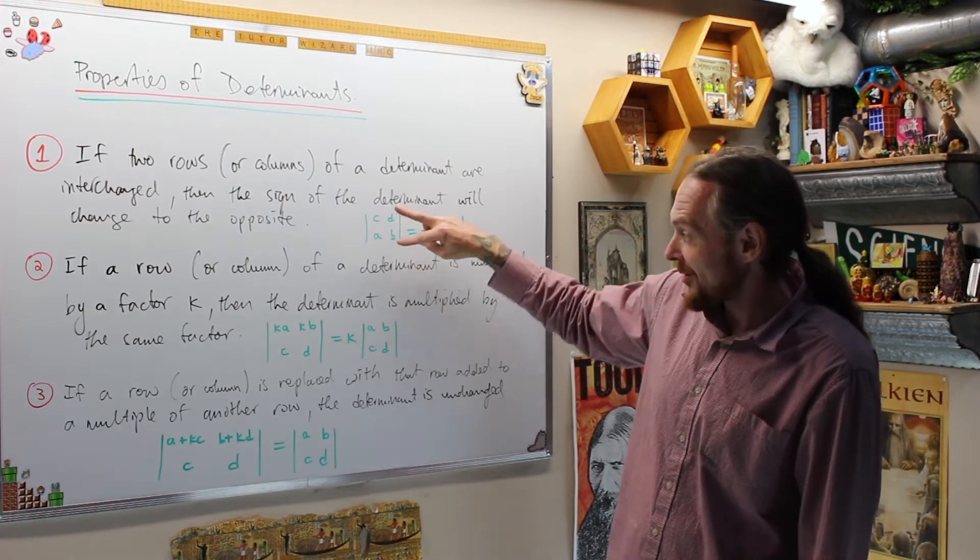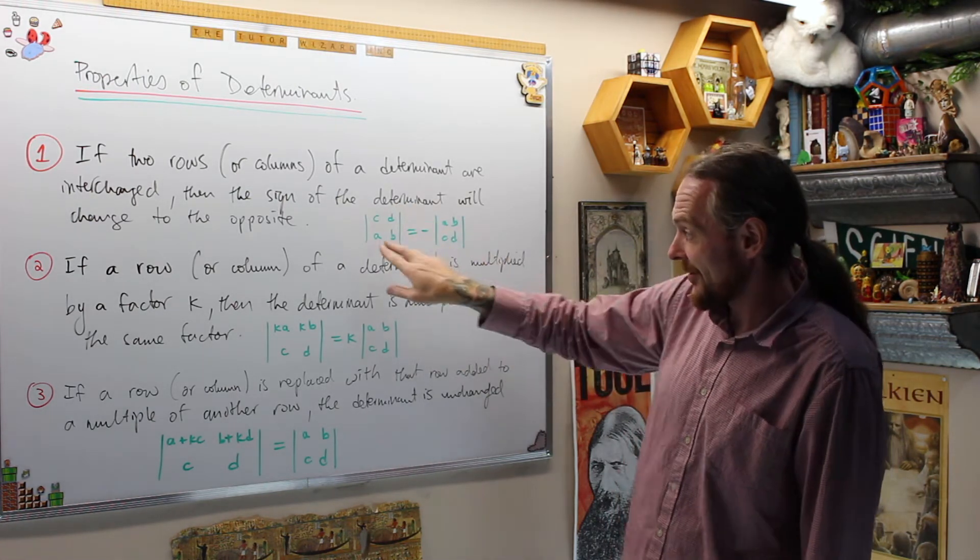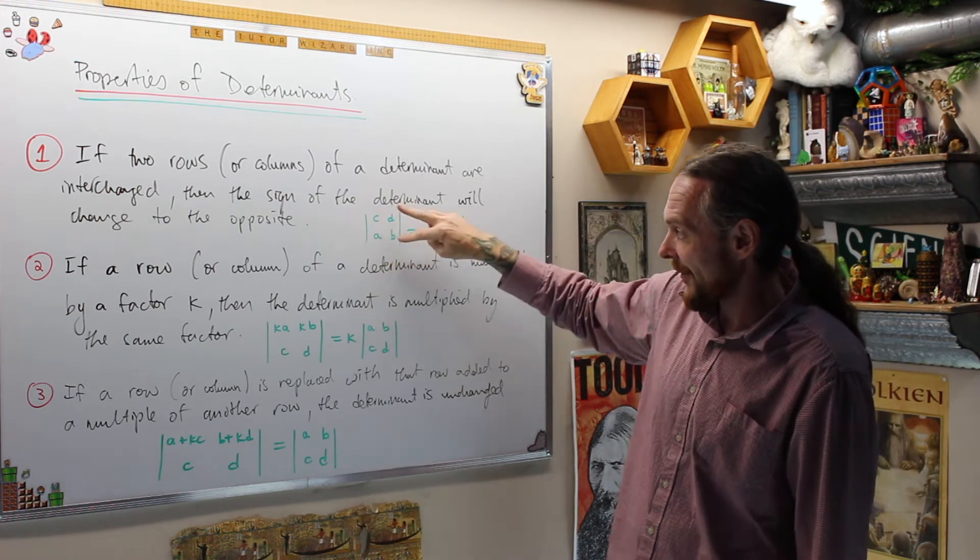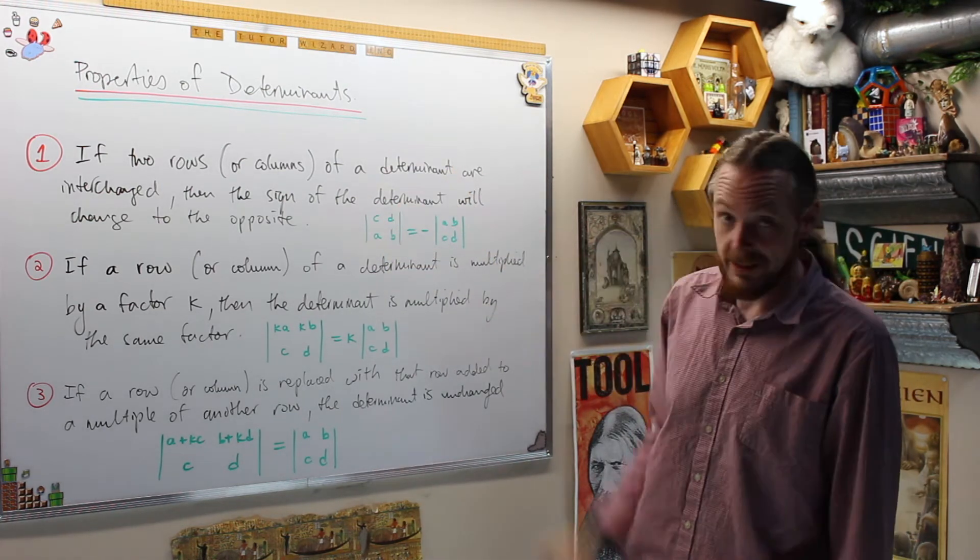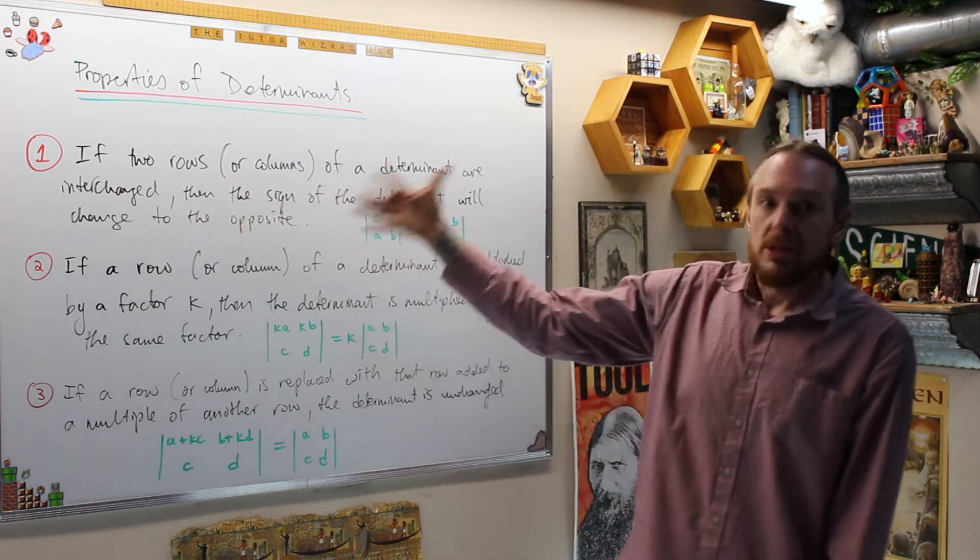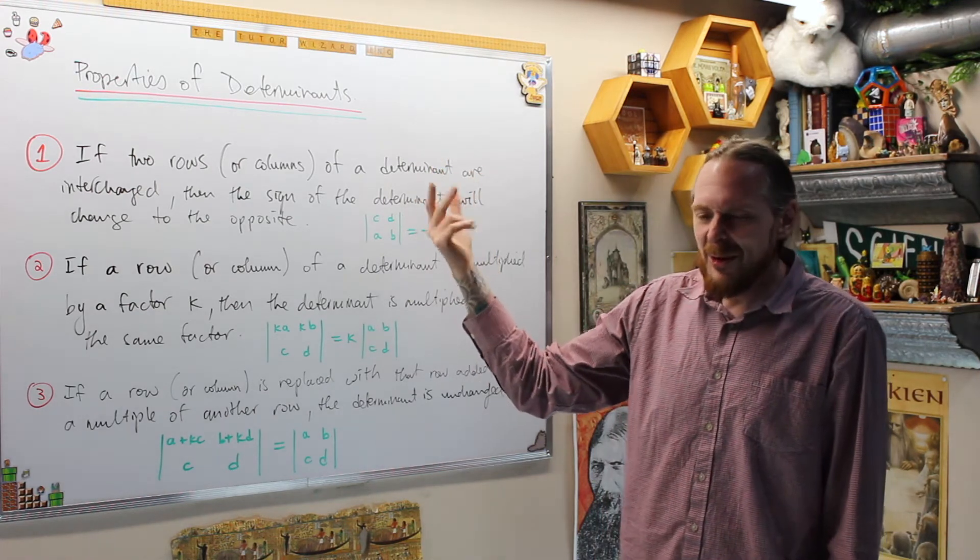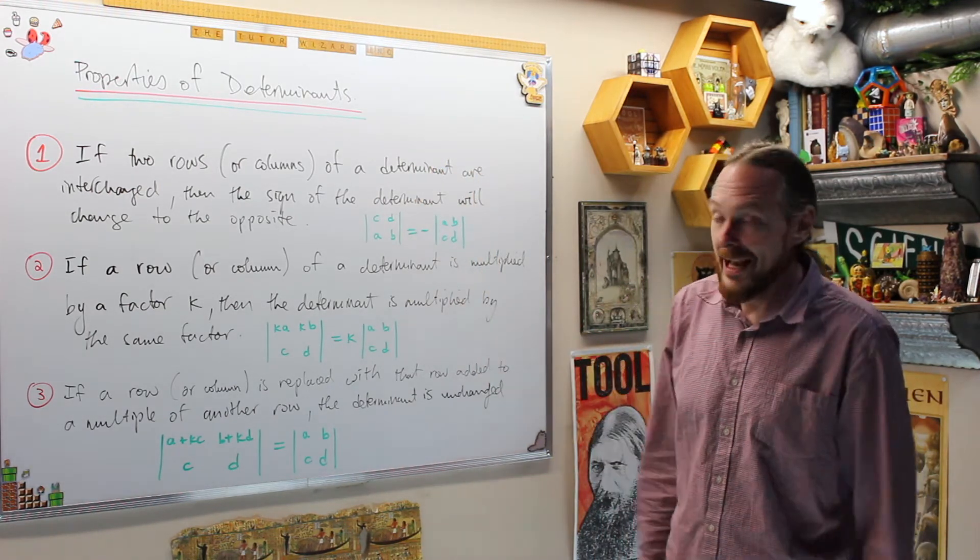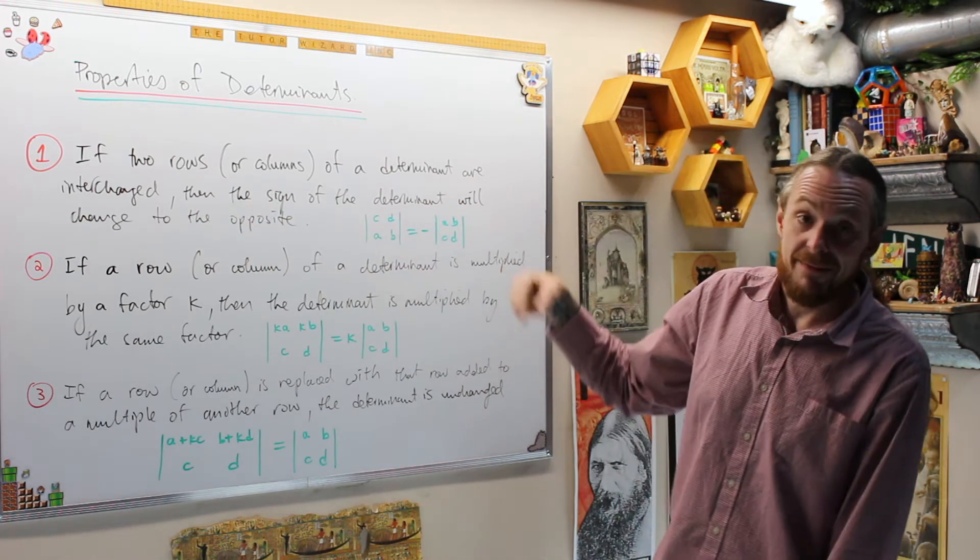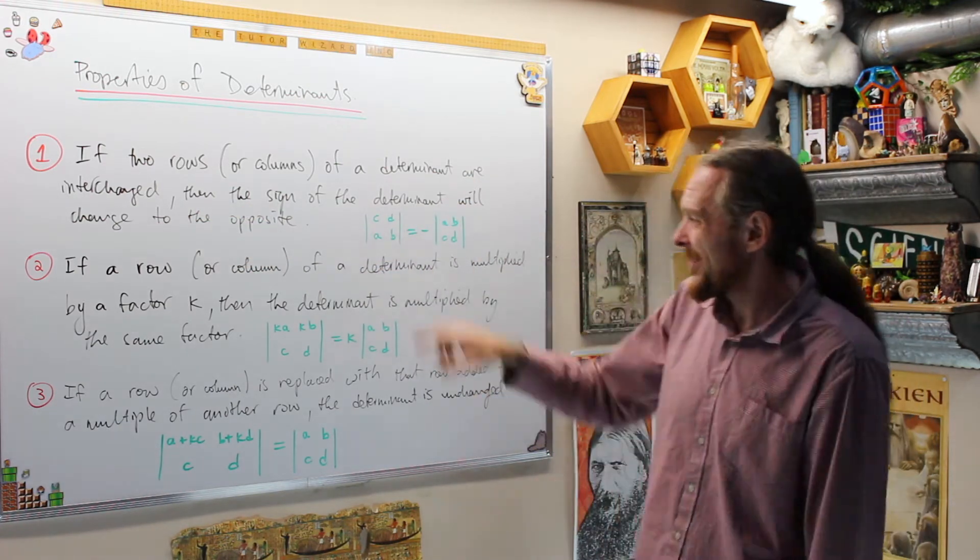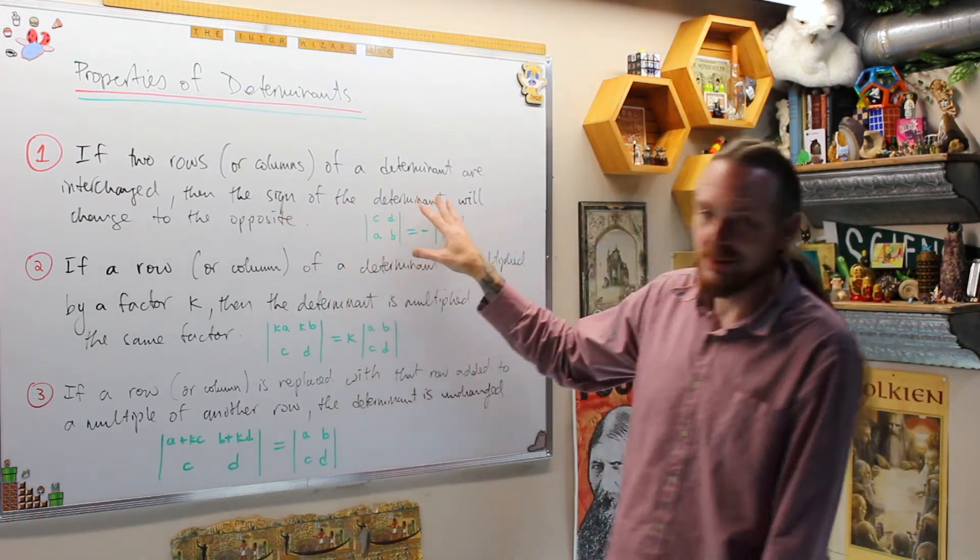This one's not too bad. If you interchange two rows or two columns, you get a negative on the outside every time you do that. So A, B's on the bottom and C, D's on the top. If I flip those, I get a negative on the outside every time you do it. So if two rows of a determinant are interchanged, the sign of the determinant is changed to the opposite.